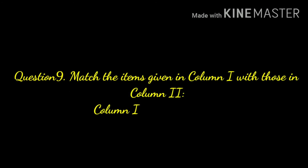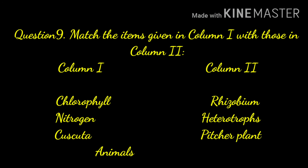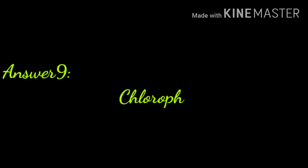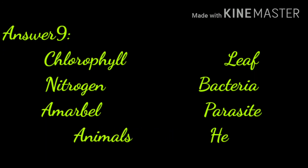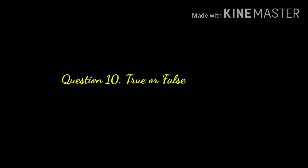Question number nine: match the items in column one with those in column two. Column one: chlorophyll, nitrogen, Cuscuta, animals, and insects. Column two: Rhizobium, heterotrophs, pitcher plant, leaf, and parasite. Answers: chlorophyll is present in leaf; nitrogen is given by bacteria; Amarbel (Cuscuta) is a parasite; animals are heterotrophs; and the insect-eating plant is the pitcher plant.